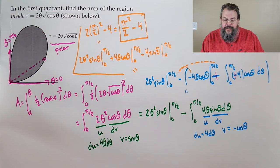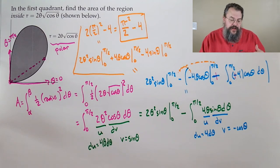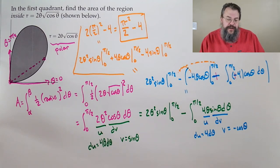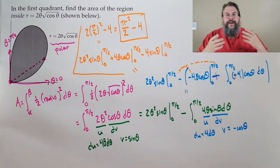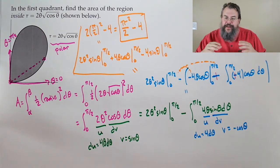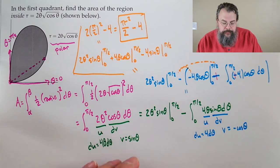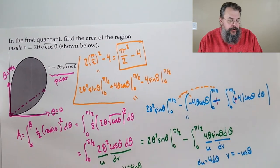It's not too surprising that integration by parts shows up here because we see that combination of algebra together with trig. Whenever we see that, there's probably going to be some integration by parts to knock down the algebra until it goes away.